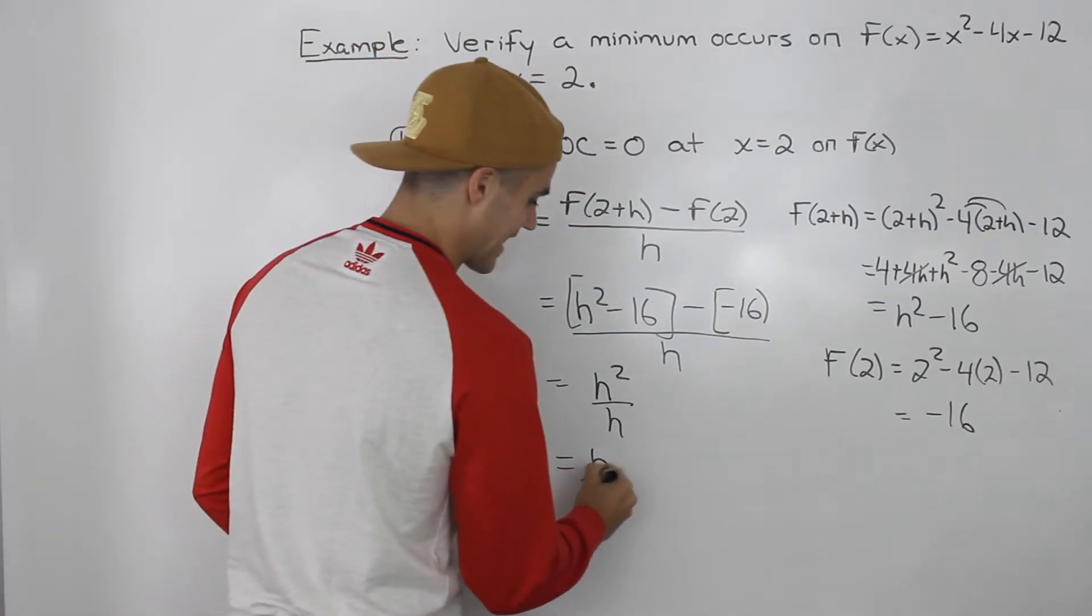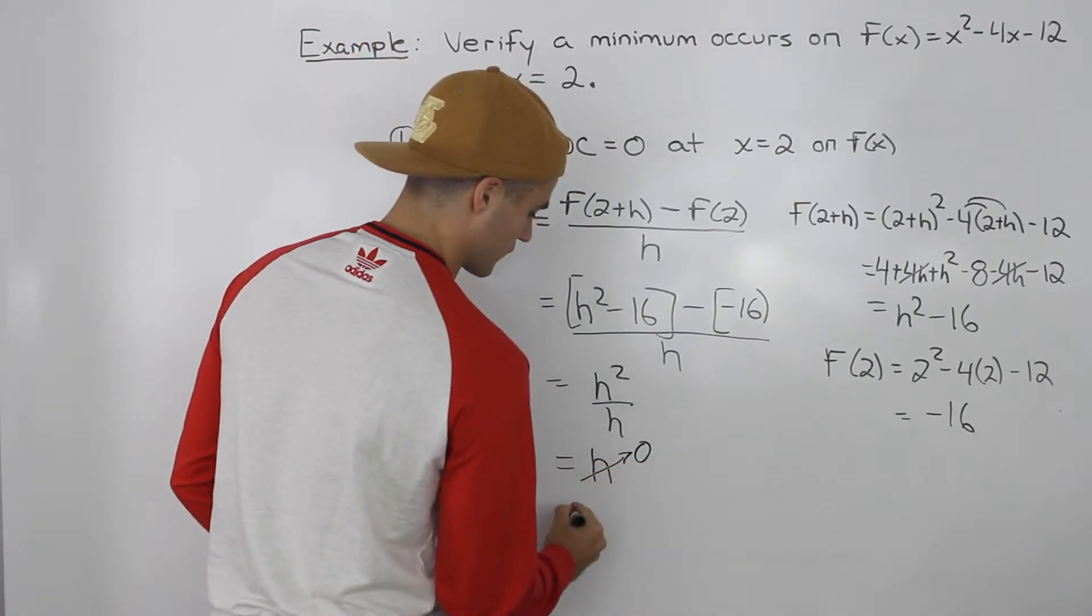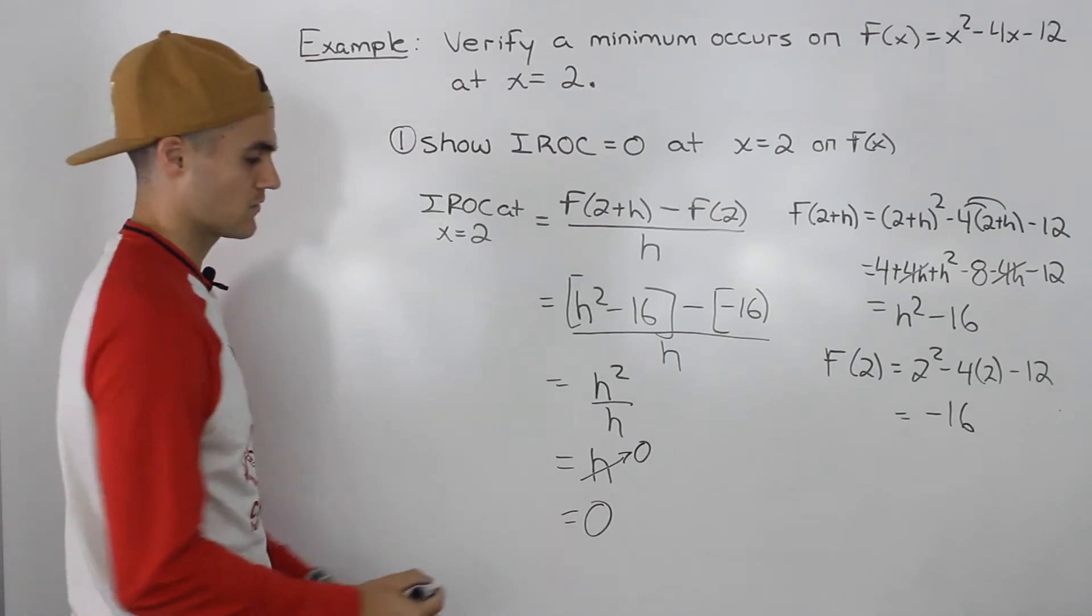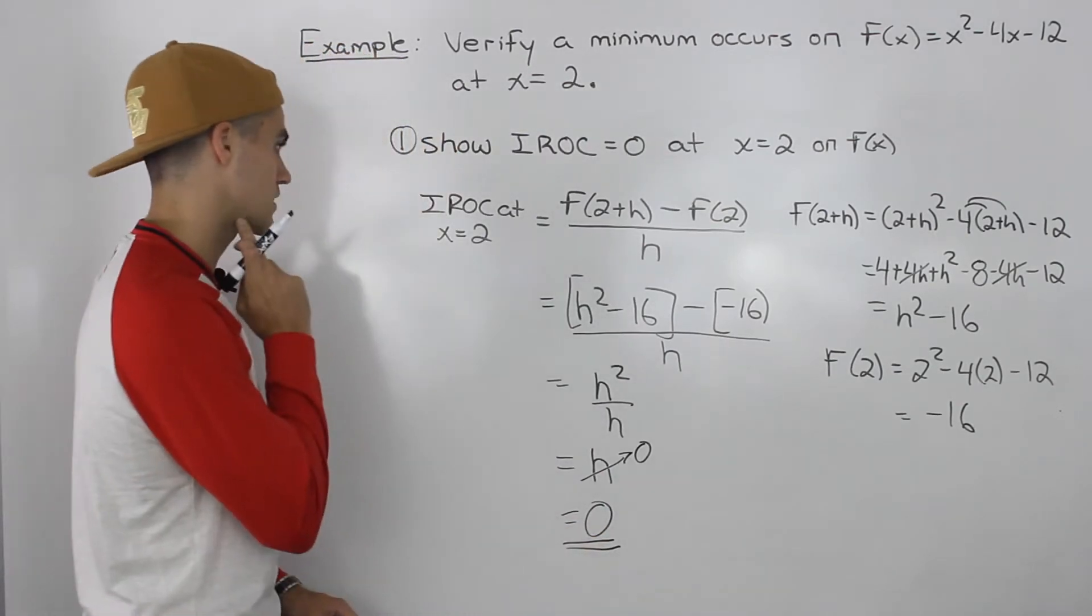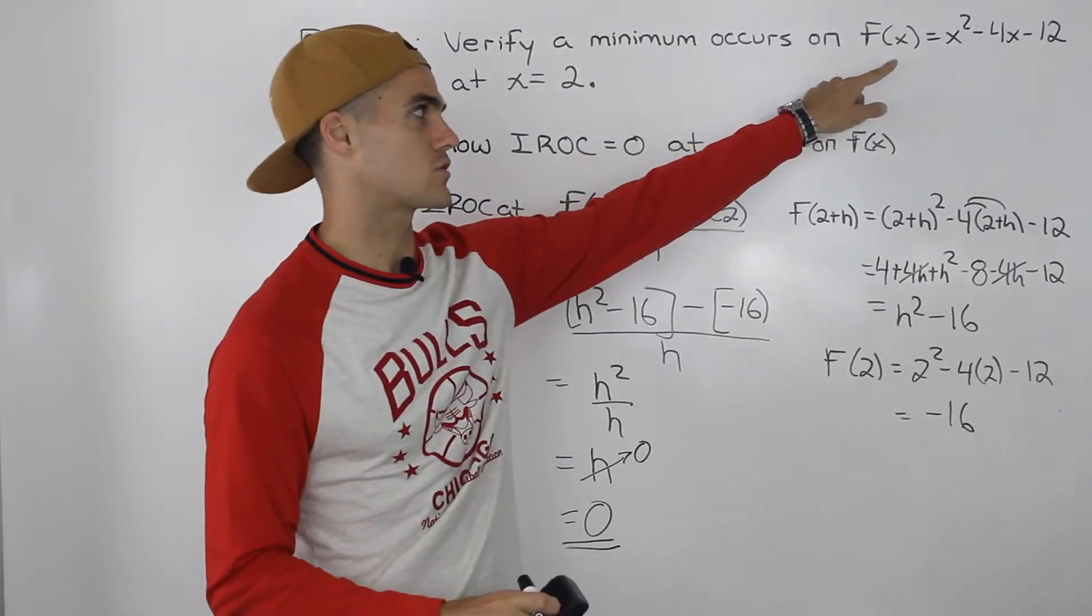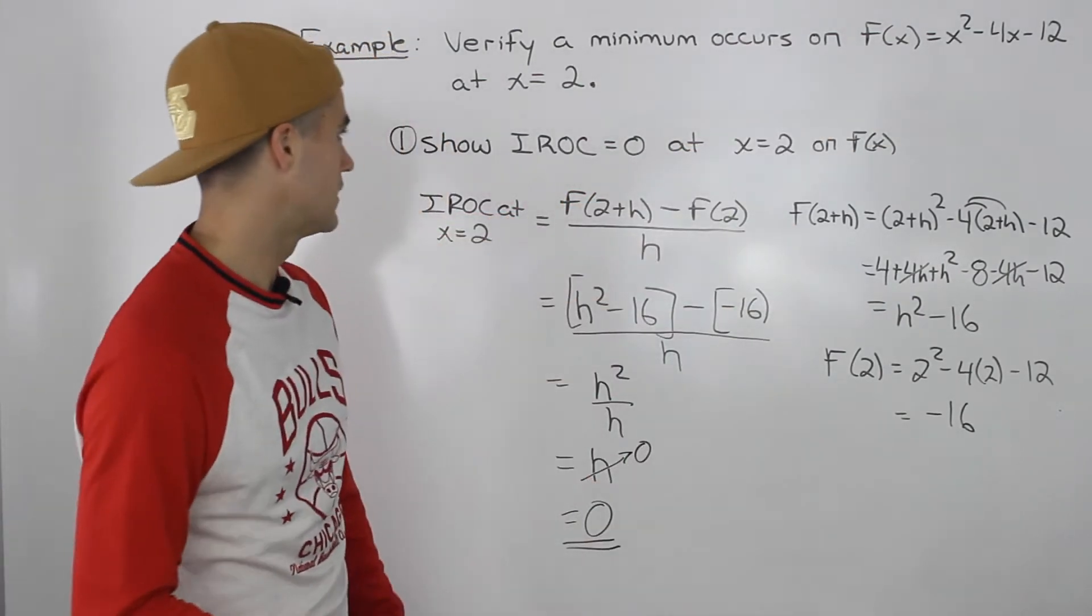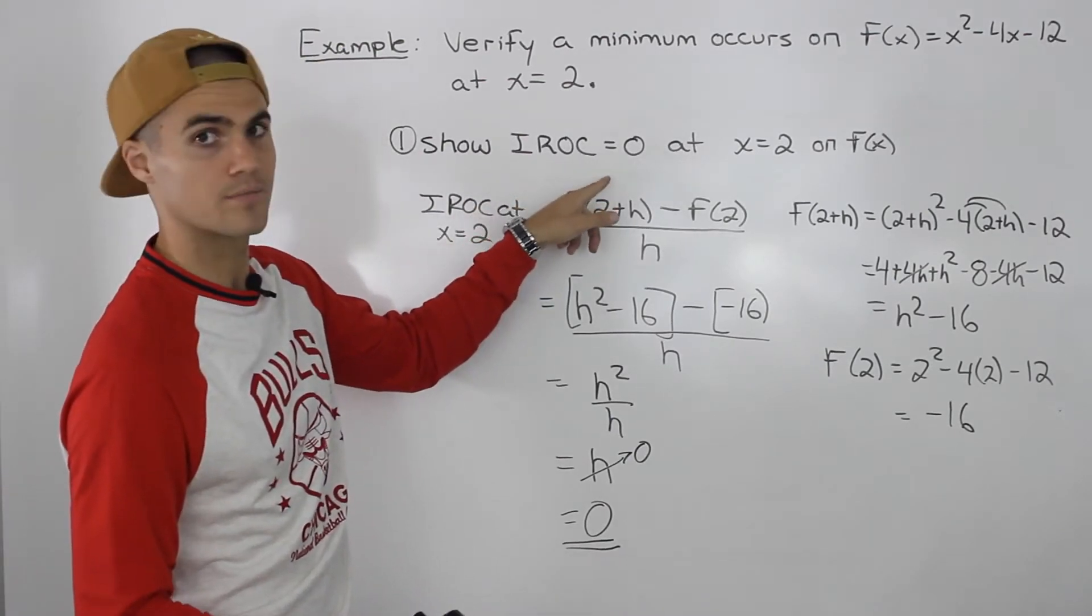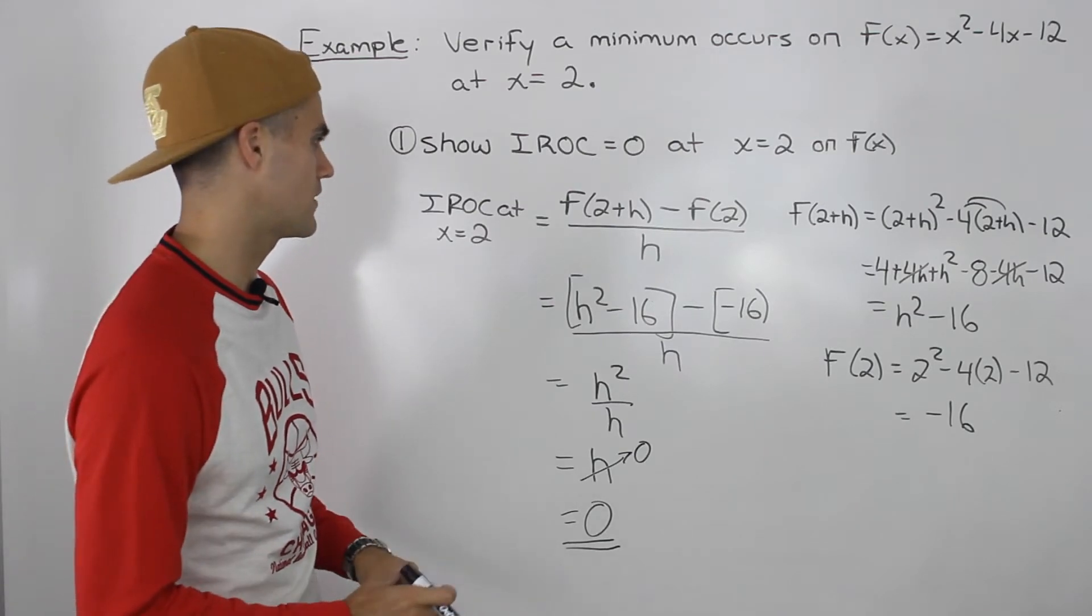Notice how there's only an h left. So if we plug in 0 for this, we would just end up getting 0. That is the instantaneous rate of change at an x value of 2 on this function x² - 4x - 12. We showed that the instantaneous rate of change equals 0 at that x value. So we completed step 1.